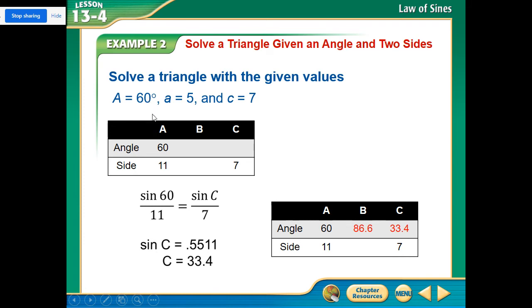All right, what about this one? Well, let's plug in the ones we know, the 60, 11. It should be 11. This A value should be 11, not 5. That was a mistake here. That should be 11. That's from a leftover problem. So sine of 60 over 11 equals sine of C over 7. Now notice this one here. We do not know what the angle is.